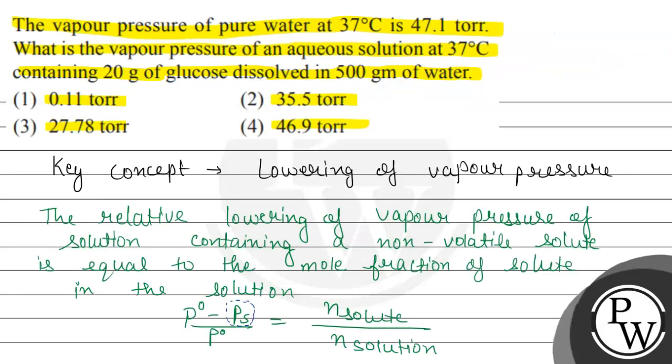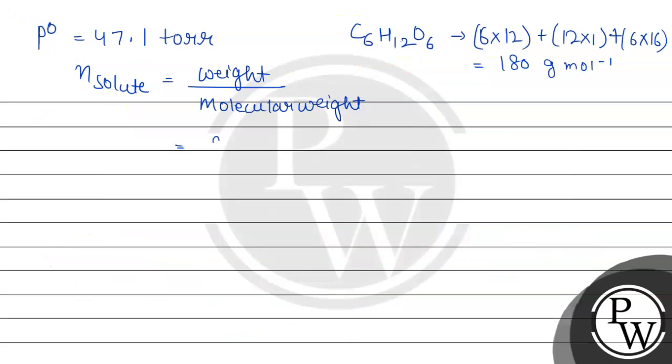The molecular weight of glucose is 180 grams per mole. According to the question, 20 grams of glucose was added. So 20 divided by 180 gives us 1 upon 9, which equals 0.111 moles.